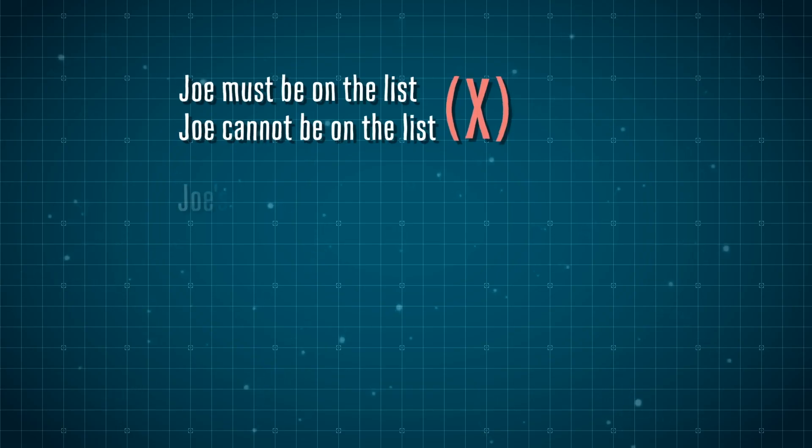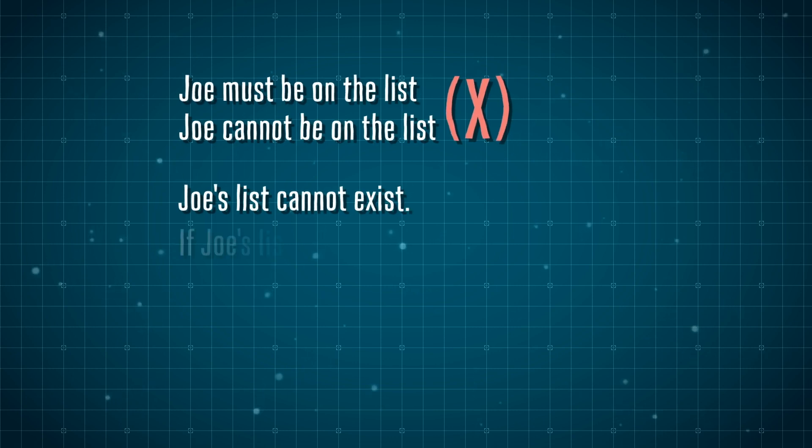Our two statements that we thought were valid propositions—Joe must be on the list and Joe cannot be on the list—contradict each other. But we can correct our mistake of the application of our logic system and just accept the fact that Joe's list cannot exist.